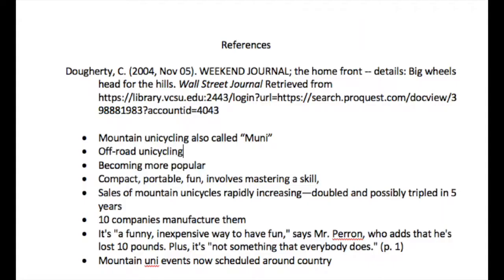After I have highlighted the main ideas, details, and direct quotes, I return to the References page that I created — the page that lists all of the references I want to use. Under the citation for the article I just read, I create a bulleted list of main ideas, details, and direct quotes from the article. I use my own words to express the main ideas and details.